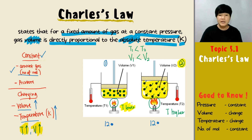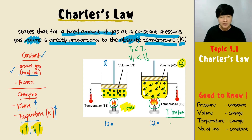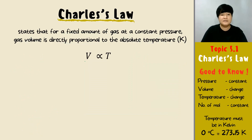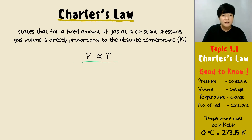You can see that when the temperature increases, the volume will also increase. The higher the temperature, the higher the volume. Since we agree that volume and temperature are directly proportional, we can work out the mathematical formula from this relationship. Volume is directly proportional with temperature.